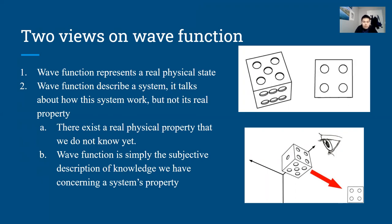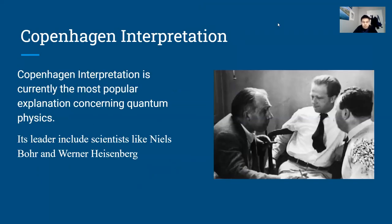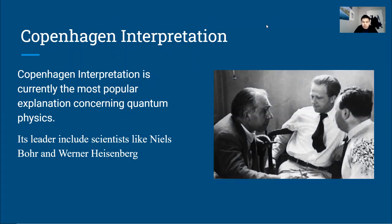The Copenhagen interpretation is the second branch, and it is currently the most popular explanation concerning quantum physics. Its leaders include scientists like Niels Bohr and Werner Heisenberg. The interpretation does not share one specific point of view — its main theory is a combination of several different or even ambivalent ideas that share some similarities, but these ideas are not identical and some even contradict themselves.